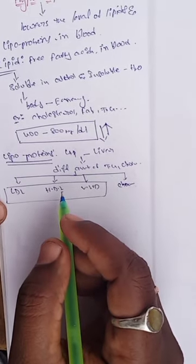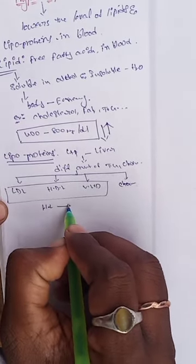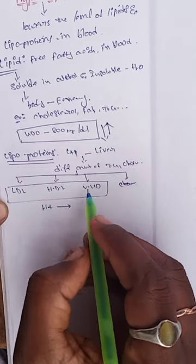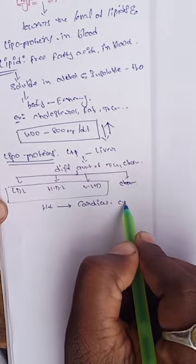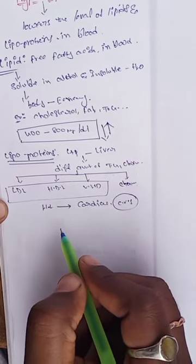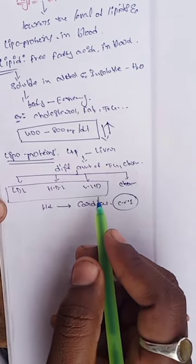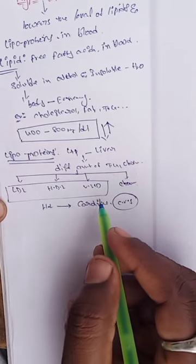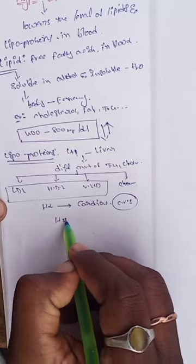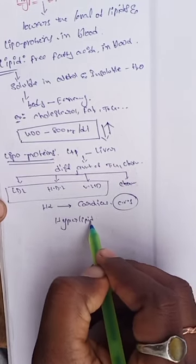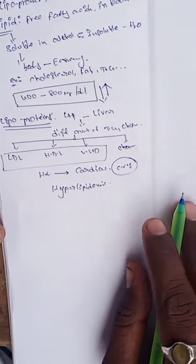Hypolipidemic drugs play an important role in treatment. What is the importance of hypolipidemic drugs? It is for the prevention of cardiac diseases — CVS disorders. CVS disorders are prevented by hypolipidemic drugs. These drugs address conditions such as atherosclerosis and hyperlipidemic diseases.